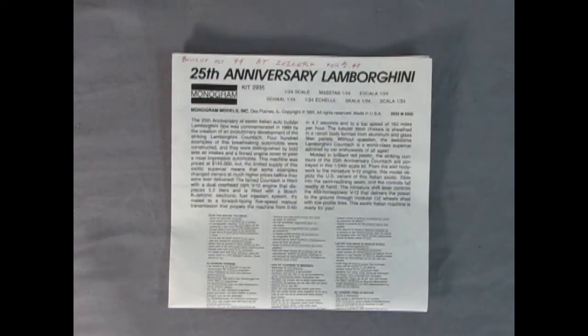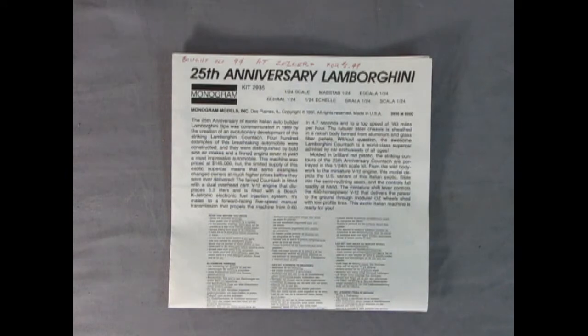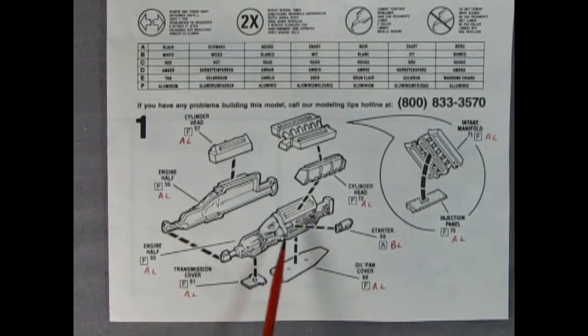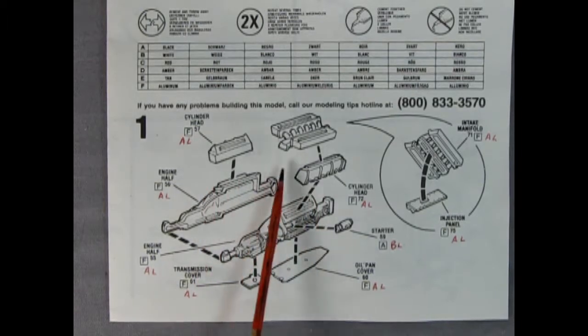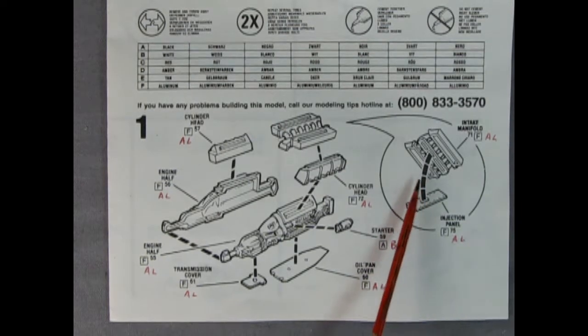Hey everybody, this is Danny the dog. Here we have the instructions for our 25th anniversary Lamborghini. There's a huge write-up all about the car and its great performance - it could go from 0 to 60 in 4.7 seconds. These instructions fold out and we'll take a look at them picture by picture. Panel one shows that amazing Lamborghini V12 motor with a right and left hand side that includes a transmission, transmission cover, oil pan cover, starter motor, cylinder heads, and the intake which is in two pieces with the injection panel on the bottom and intake manifold on top.